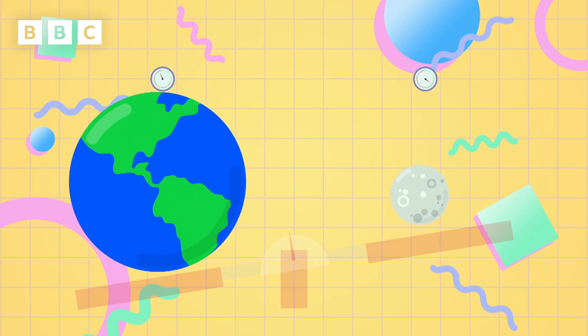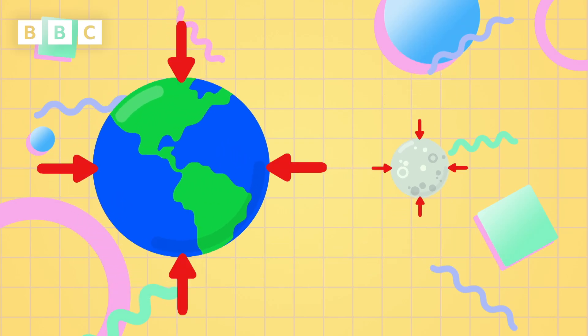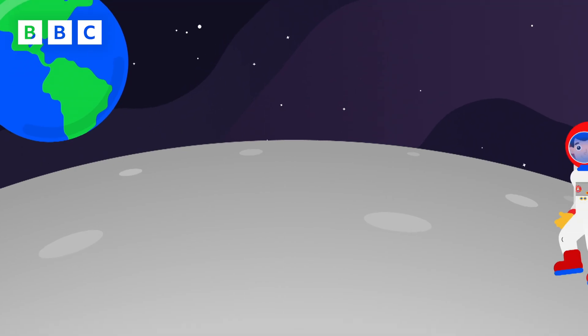The Moon also has a smaller mass than Earth. So the force of gravity on the Moon is less than the force of gravity on Earth. So if you were ever on the Moon, you would feel much lighter if you tried to walk around on it.